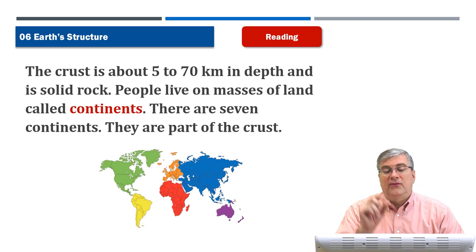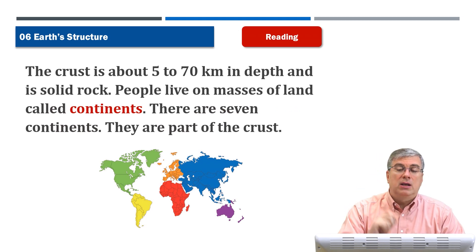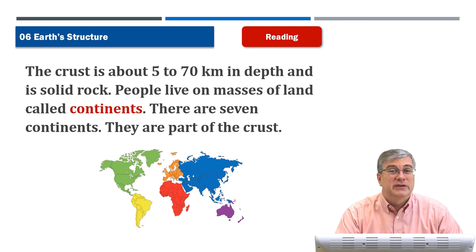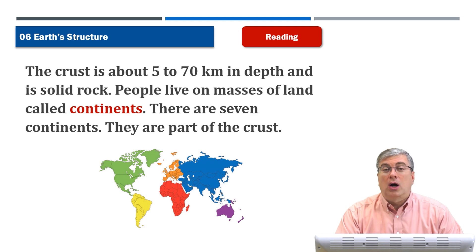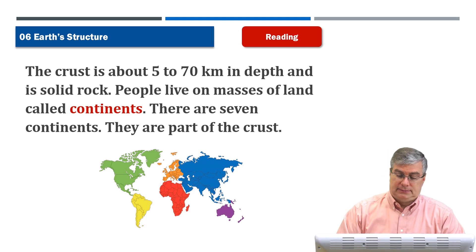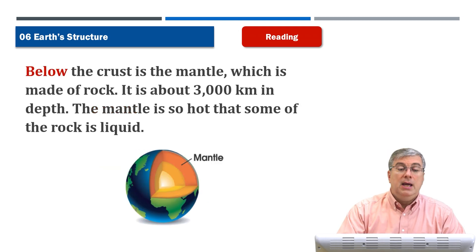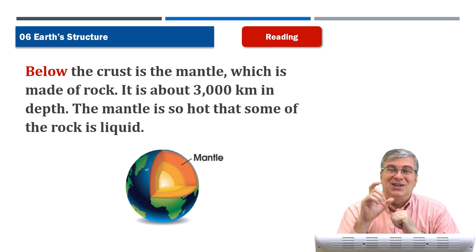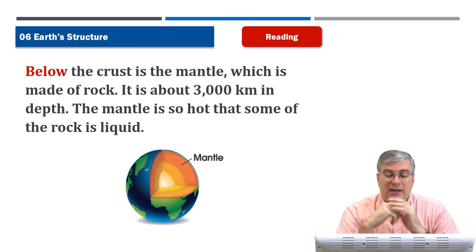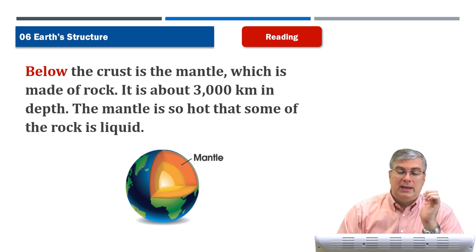The crust is about 5 to 70 kilometers in depth and is solid rock. People live on masses of land called continents. There are seven continents. They are part of the crust. Below the crust is the mantle, which is made of rock. It is about 3,000 kilometers in depth. The mantle is so hot that some of the rock is liquid.